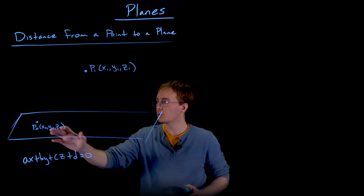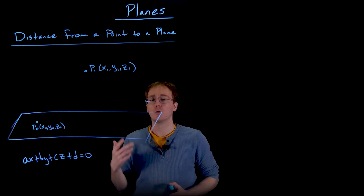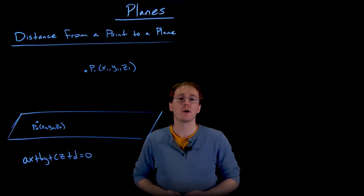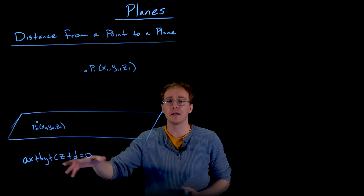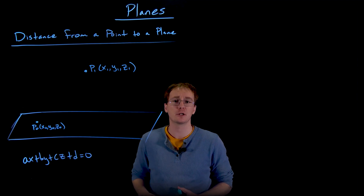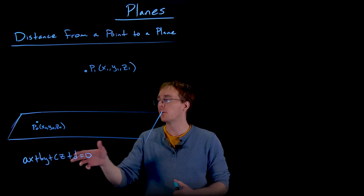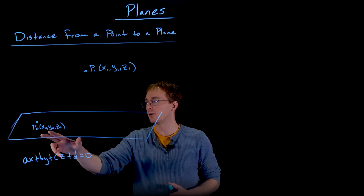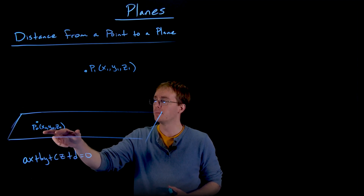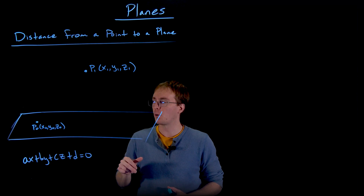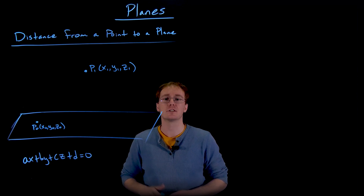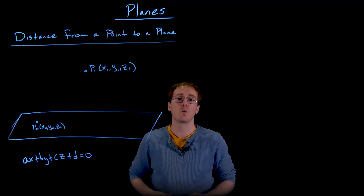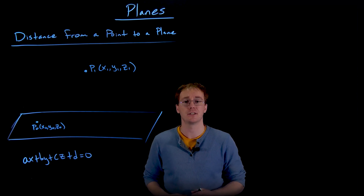We're also going to assume we know at least one point our plane goes through, which we can always find from our scalar equation, and we're going to suppose in general that this known point on our plane has coordinates of X0, Y0, and Z0.